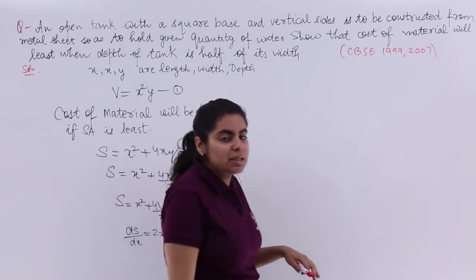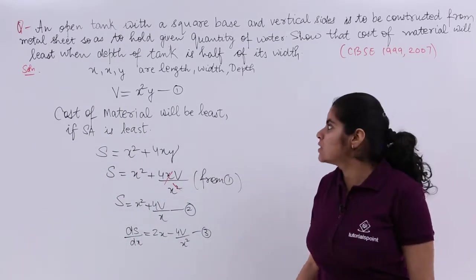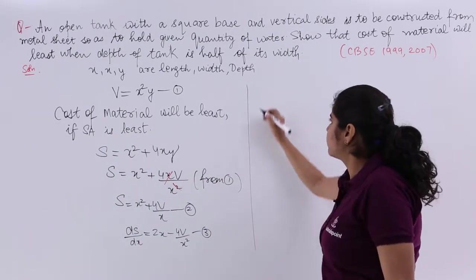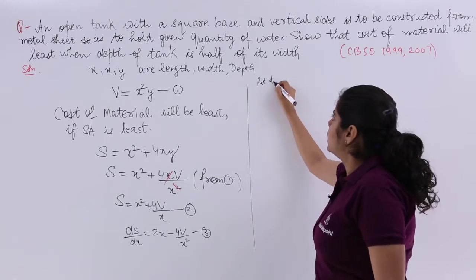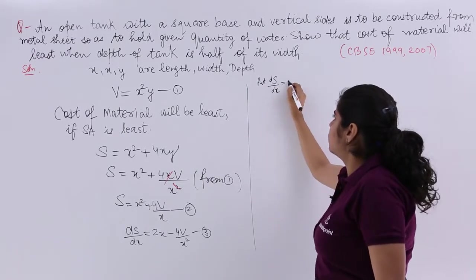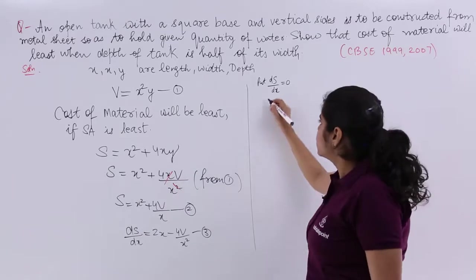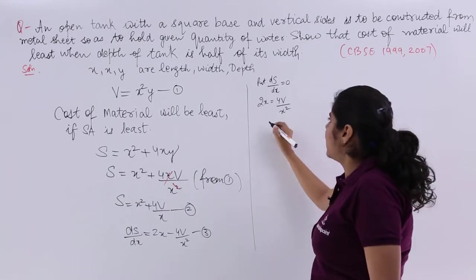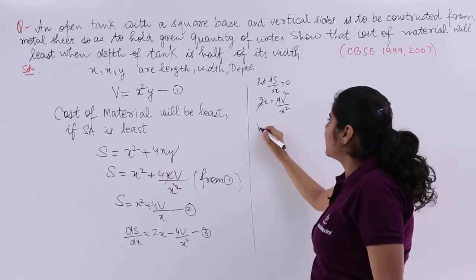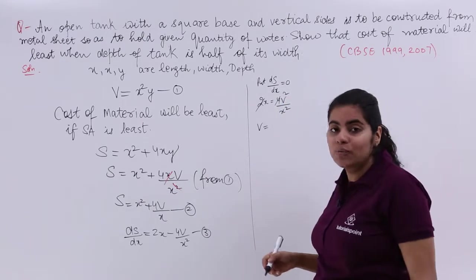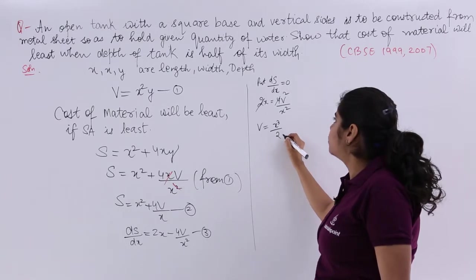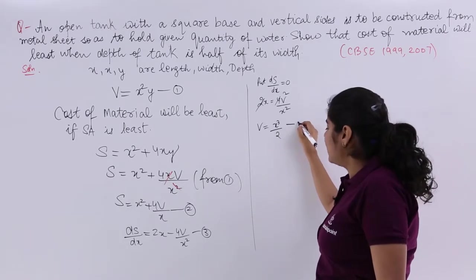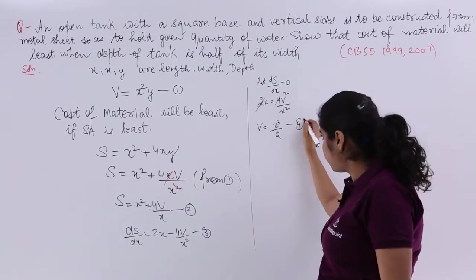Now for maxima or minima, the first derivative is to be put equal to 0. So I write dS/dx = 0. So it is 2x = 4V/x², or in short, whatever cancels you can cancel. So it becomes 2V = x³, or V = x³/2. And that can be named as equation number 4.